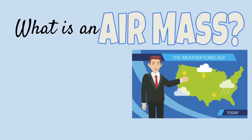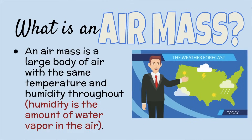So what is an air mass? An air mass is a large body of air with the same temperature and humidity throughout. Humidity is the amount of water vapor in the air. If you have a high humidity, you have a high amount of water vapor in the air around you. These air masses are huge — they can be many, many square kilometers.